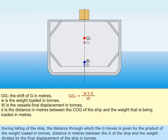During listing of the ship, the distance through which the G moves is given by the product of the weight loaded in tons and the distance in meters between the center of gravity of the ship and the weight, divided by the final displacement of the ship in tons.